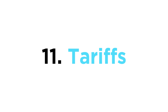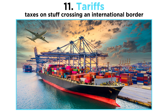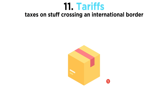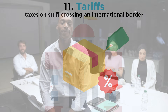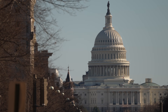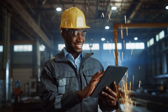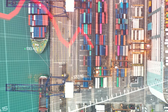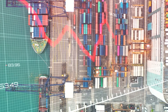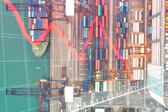Number eleven: tariffs. Tariffs are taxes on stuff crossing an international border — primarily on imports, though also on exports. Tariffs can be a fixed percentage of the price, or change according to the price. Historically, tariffs have been an important source of revenue for governments. Economists who favor tariffs argue that they are a way for governments to both make money and encourage production to stay domestic. However, the vast majority of economists argue that tariffs have a negative effect on economic growth and economic welfare. We will look more at the pros and cons of tariffs in a future tutorial.